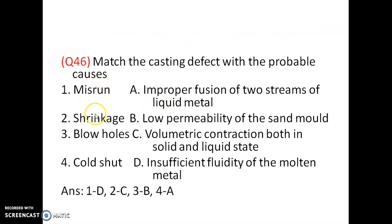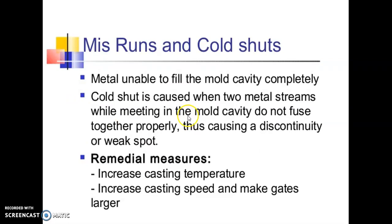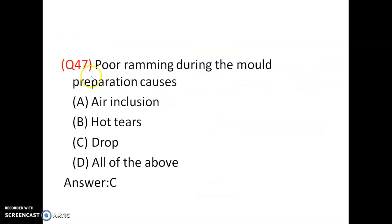Match the following: misrun, shrinkage, blow holes, and cold shed. Blow holes occur due to low permeability. Shrinkage is due to volumetric contraction. Misrun is due to insufficient fluidity of the molten metal (1D). Cold shed is due to improper fusion of two streams of liquid metal. Misrun means the metal is unable to fill the mold cavity completely. Poor ramming during mold preparation causes drop — the mold wall drops into the casting.